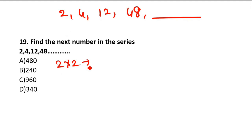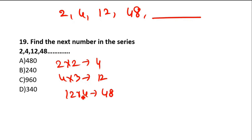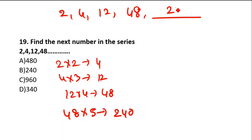So 2 multiplied by 2 is 4. 4 multiplied by 3 is 12. 12 multiplied by 4 is 48. Considering that pattern, the next number uses the next multiplier, which is 5. So 48 multiplied by 5 is nothing but 240.